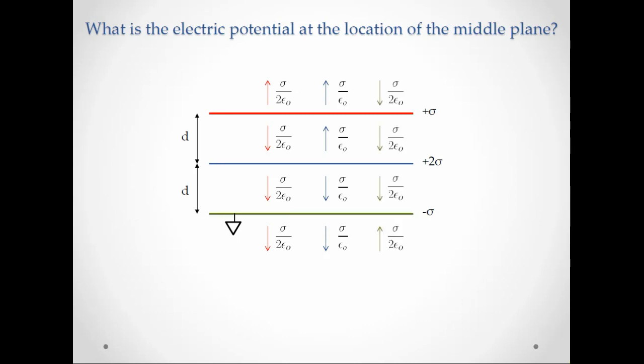If we look at the third plane, we notice it's sigma over two epsilon naught in magnitude, just like the first plane. But now the direction is different. If we're above the plane, it points down. If we're below the plane, it points up.